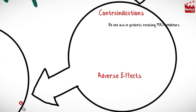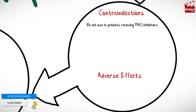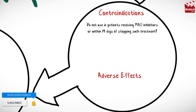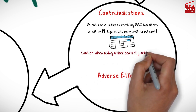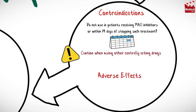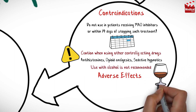Citalopram is contraindicated in patients receiving MAO inhibitor therapy, or within 14 days of stopping such treatment. It should be used cautiously with other centrally acting medications such as antihistamines, opioid analgesics, and sedative hypnotics, and use with alcohol is not recommended.